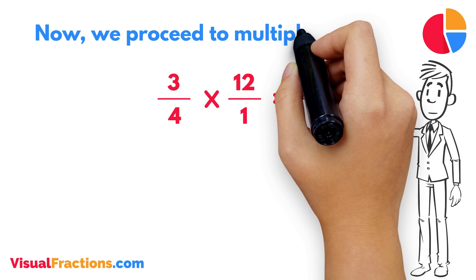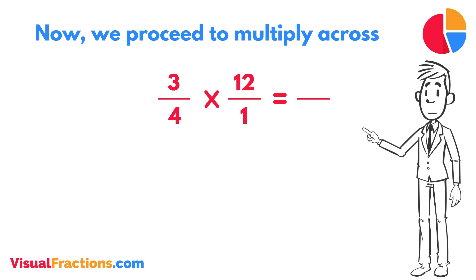Now, we proceed to multiply across. First, multiply the numerators: 3 times 12 equals 36.